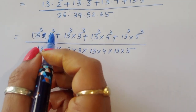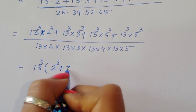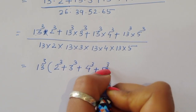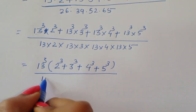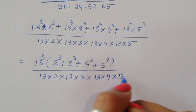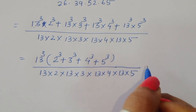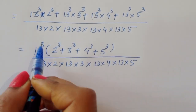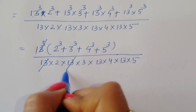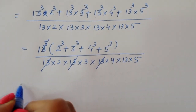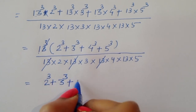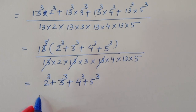Taking 13 power 3 common from the numerator, we are left with 2 power 3 plus 3 power 3 plus 4 power 3 plus 5 power 3. The denominator has 13 times 2 times 13 times 3 times 13 times 4 times 13 times 5, which gives 13 power 4 times 2 times 3 times 4 times 5. The 13 power 3 in the numerator cancels with three of the 13 factors in the denominator, leaving one 13 remaining.